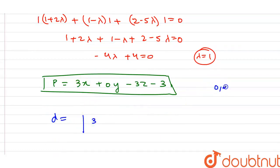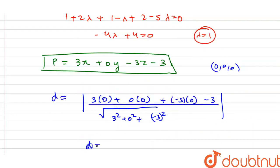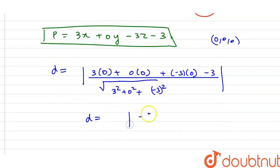Origin is 0,0,0. a into x0 plus 0 into 0 plus minus 3 into 0 minus 3, whole divided by square root of a squared plus b squared plus c squared. That is 3 squared plus 0 squared plus minus 3 squared.